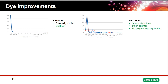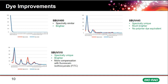StarBright UV 445 is spectrally unique with some — but not high-level — spillover into other channels. It is approximately 20 times brighter than the competitor dye, and there is no polymer dye equivalent to StarBright UV 445, making it quite a unique dye. StarBright UV 510 is also spectrally unique and brighter, though there is more compensation required in the first blue channel — around the FITC/Alexa 488 channel — which I'll show in more detail later.